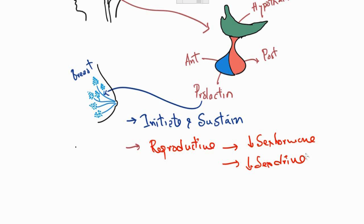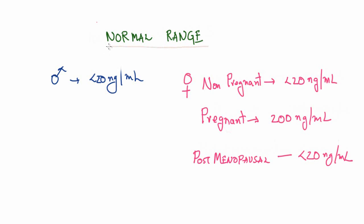Let's talk about the normal ranges associated with prolactin. In males, normal ranges are usually less than 20. In females there are three stages: non-pregnant females are less than 30; during pregnancy, levels can reach around 200; and in the post-menopausal stage they are around 20.